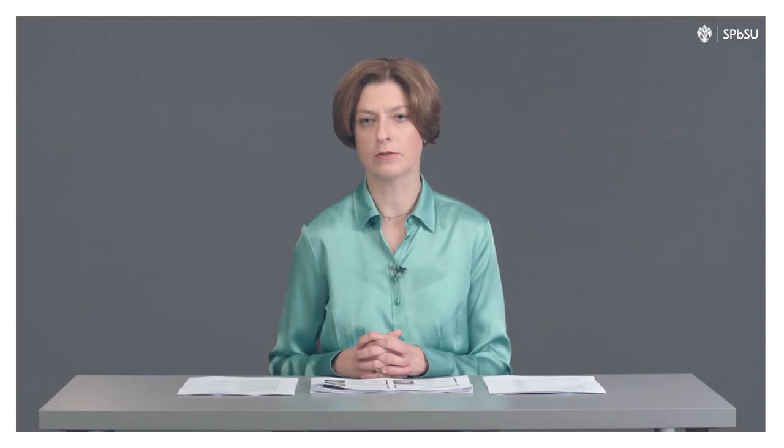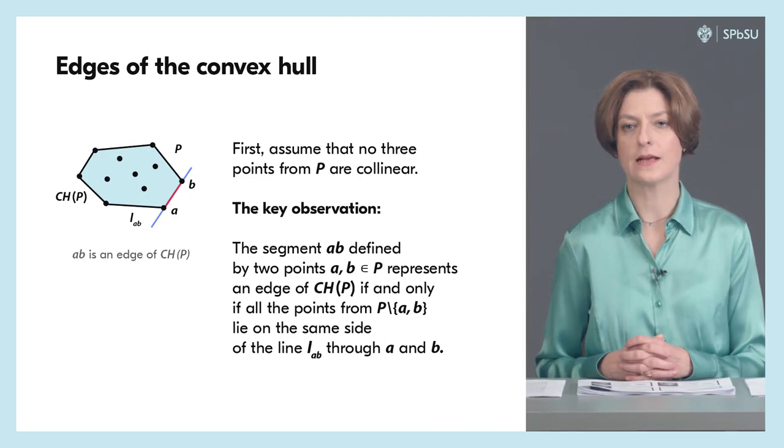Let P be a set of endpoints in the plane. For now, let us assume that no three points from P are collinear or lie on the same line. The first observation we are going to make is the following: two points from the set P define an edge of the convex hull if and only if all the other points from P lie on the same side from the line through the segment.